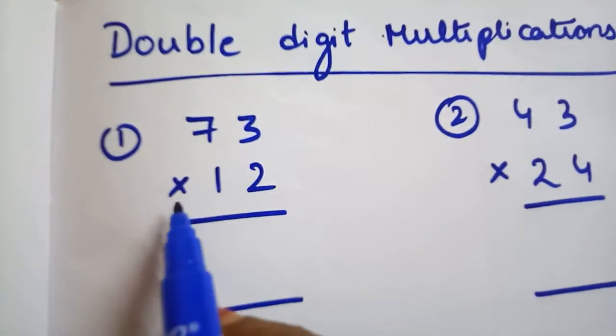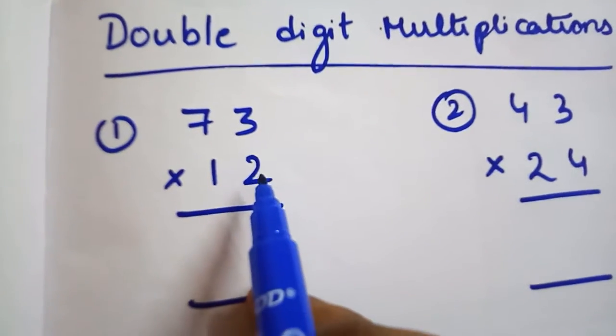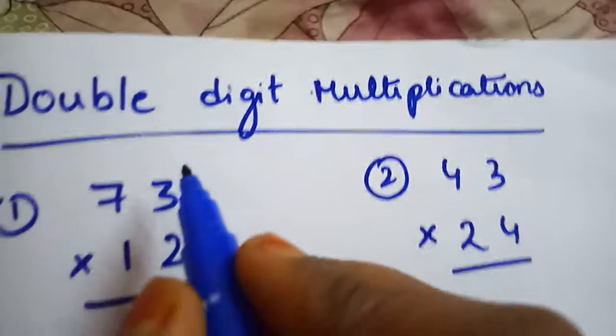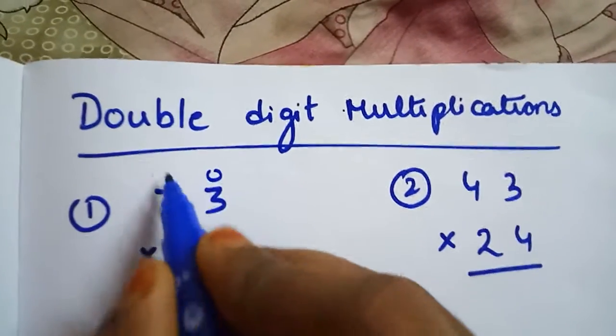See here, 73 into 12. 1 to 12 equal to how much? So how to do this, let us see now. First of all, write the place values for both: ones, tens.